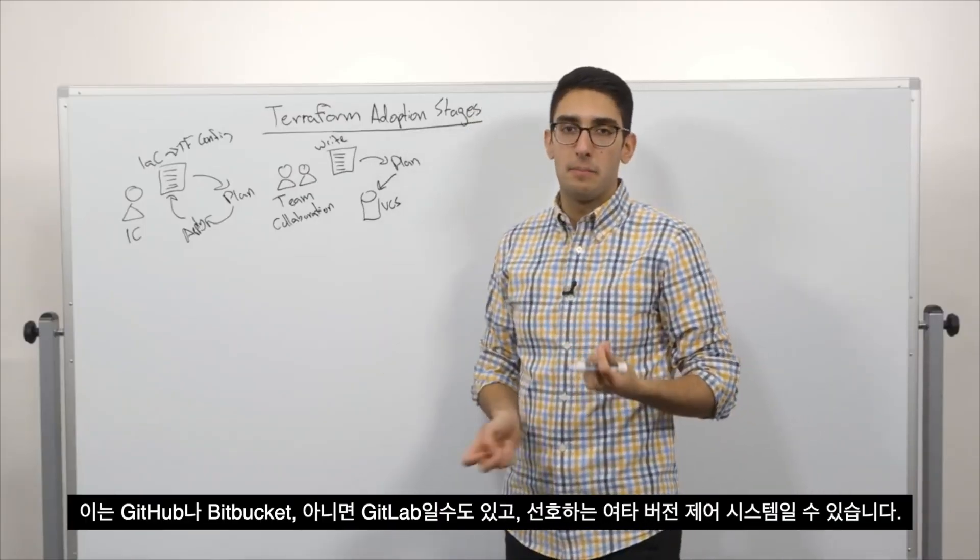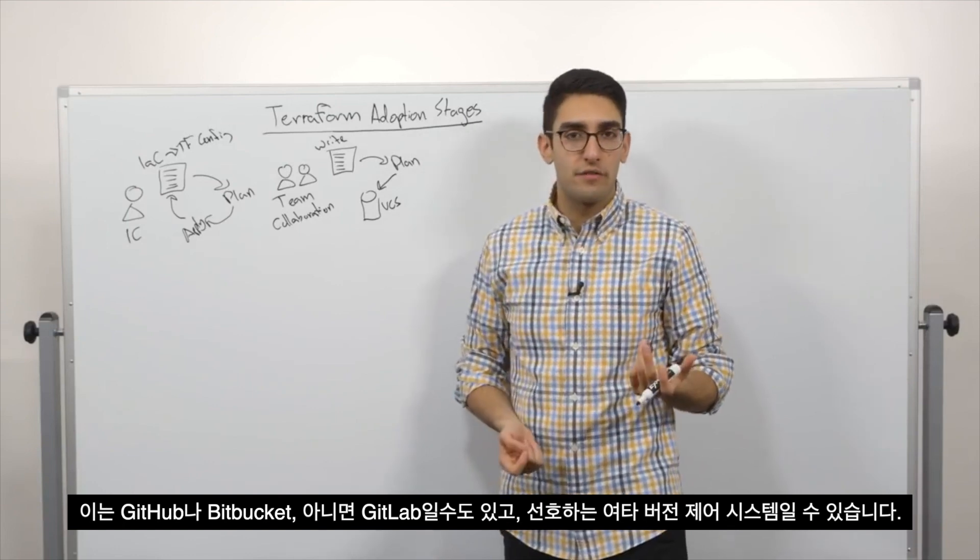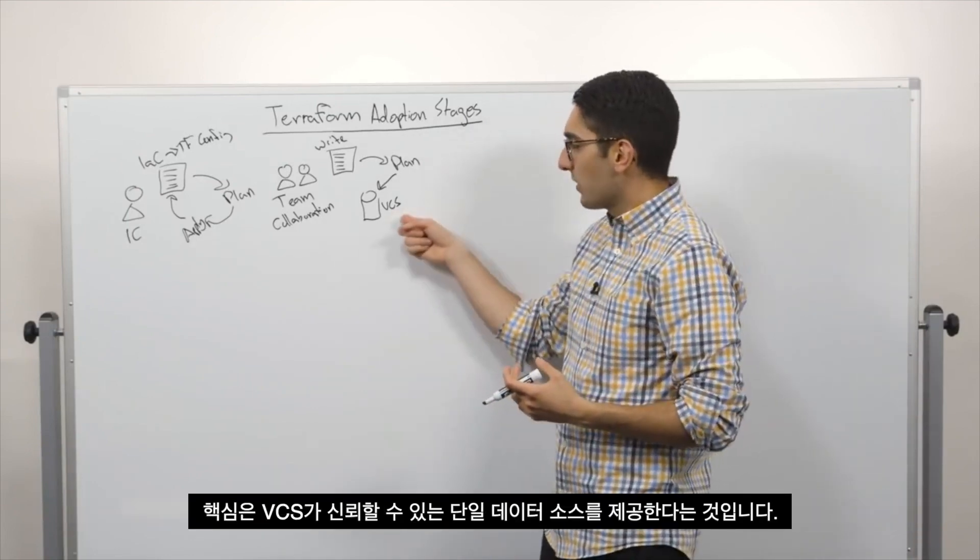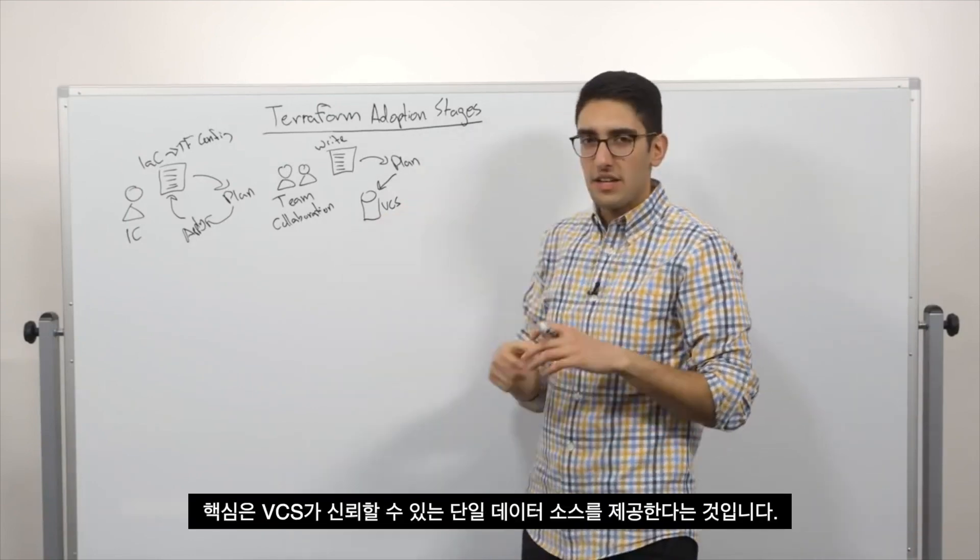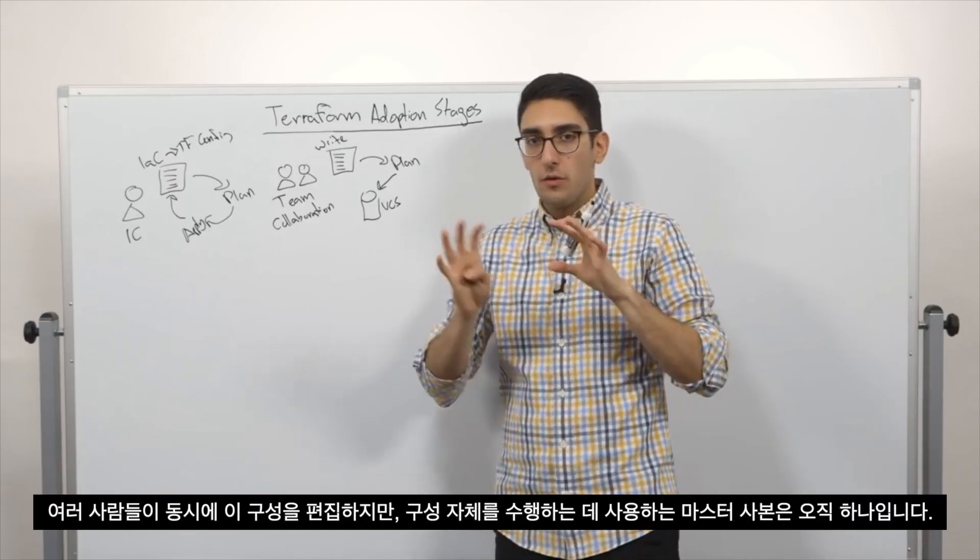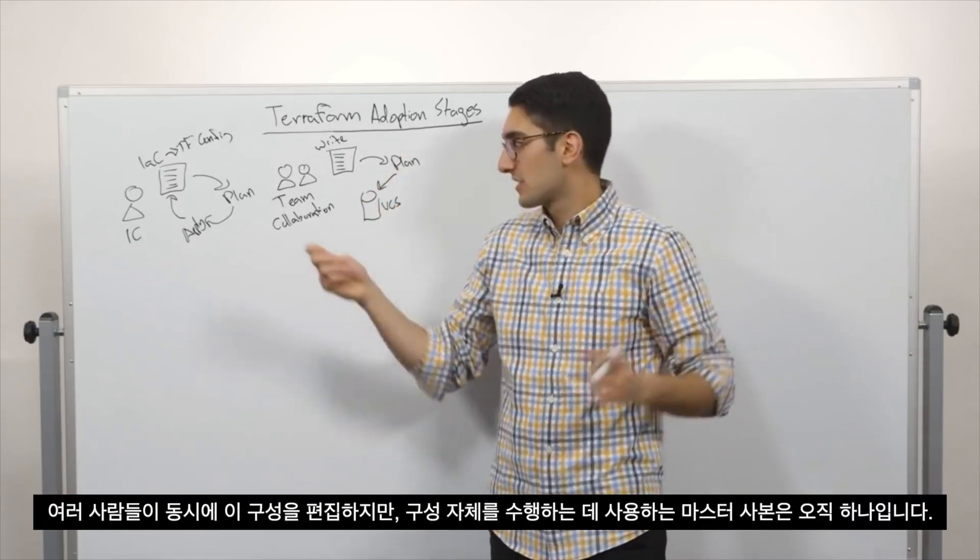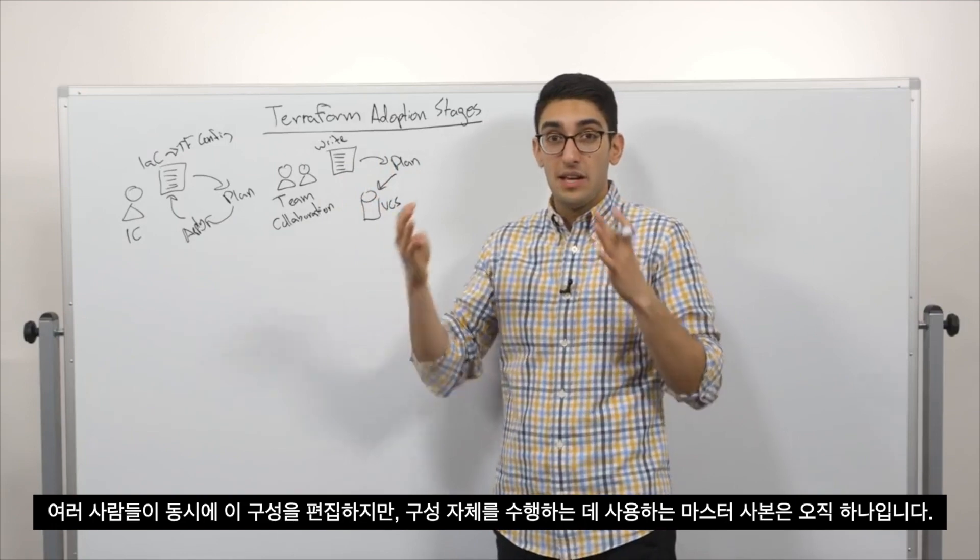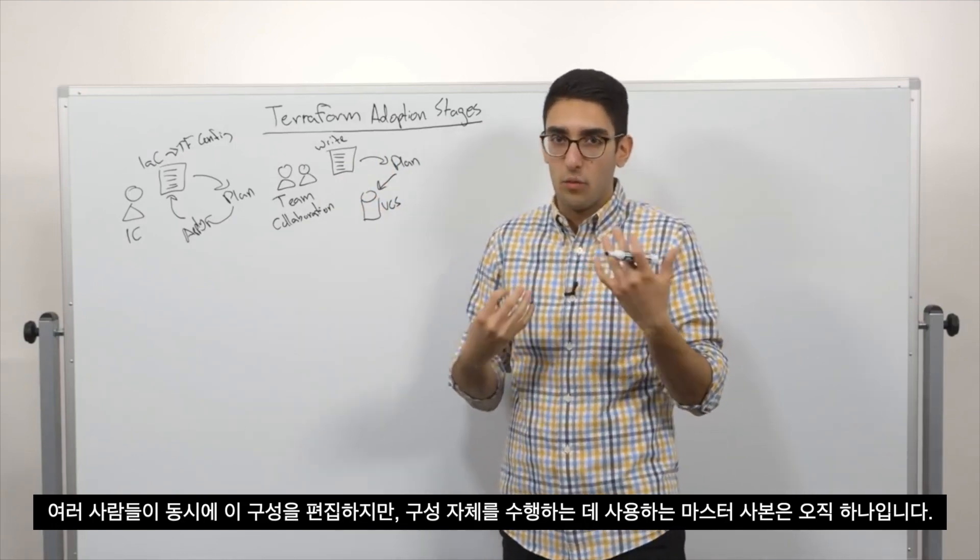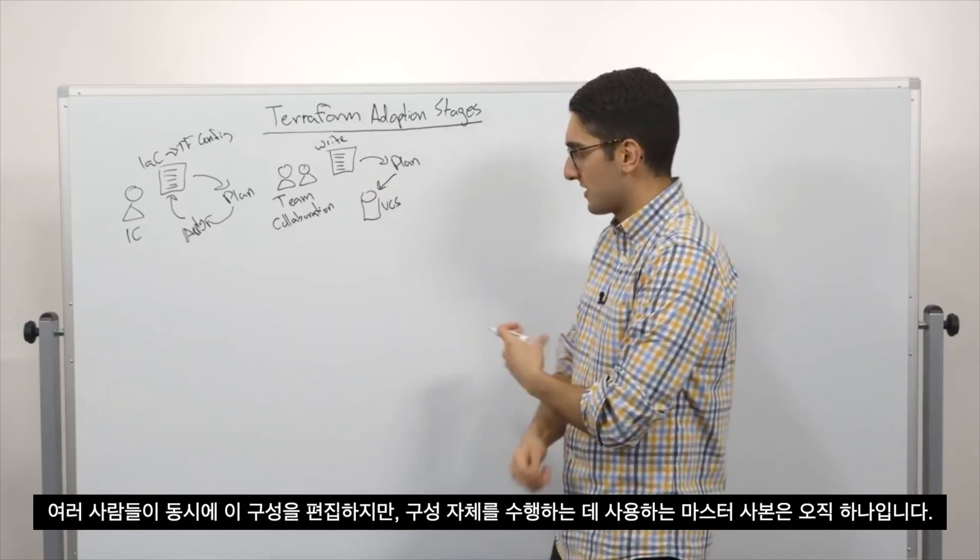So this could be GitHub or Bitbucket or GitLab or our favorite version control system. The key is that what the version control system is doing is giving us a single source of truth. So although we may have multiple people editing this configuration at the same time, there can only be a single copy of the master, the kind of what we're using to drive our configuration itself.